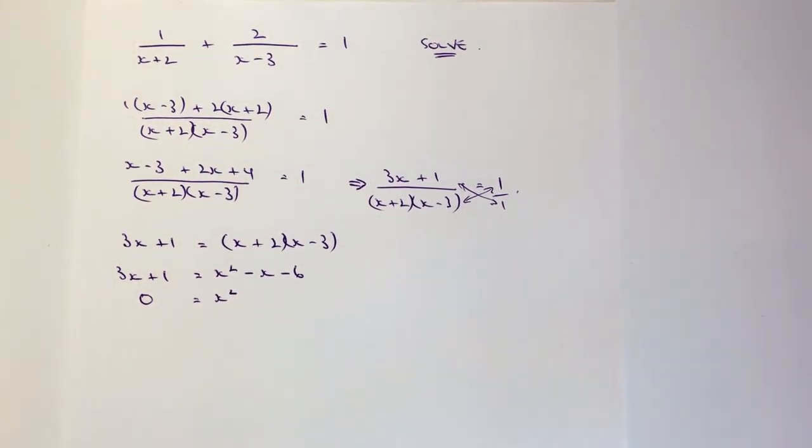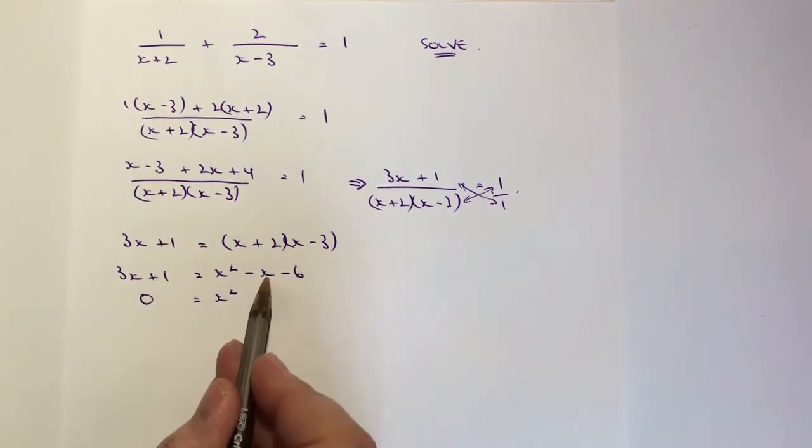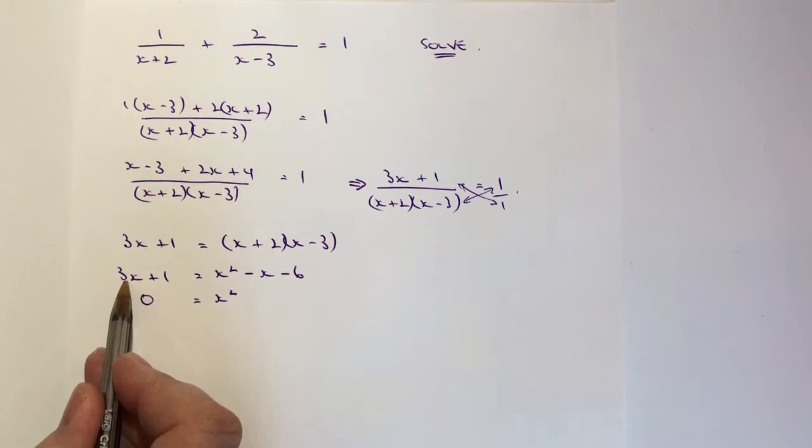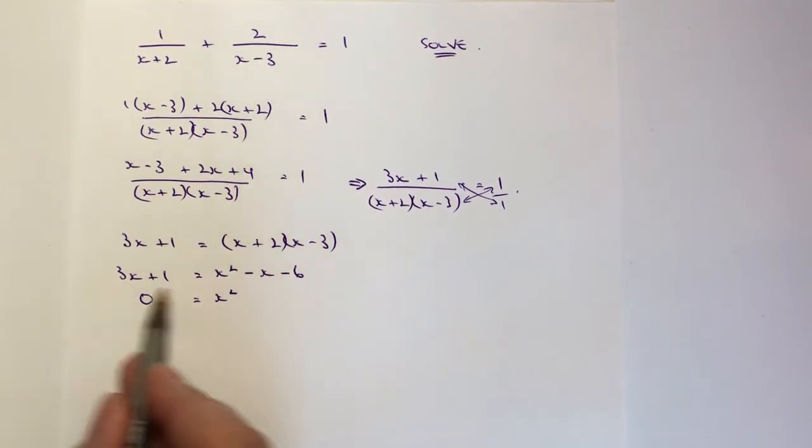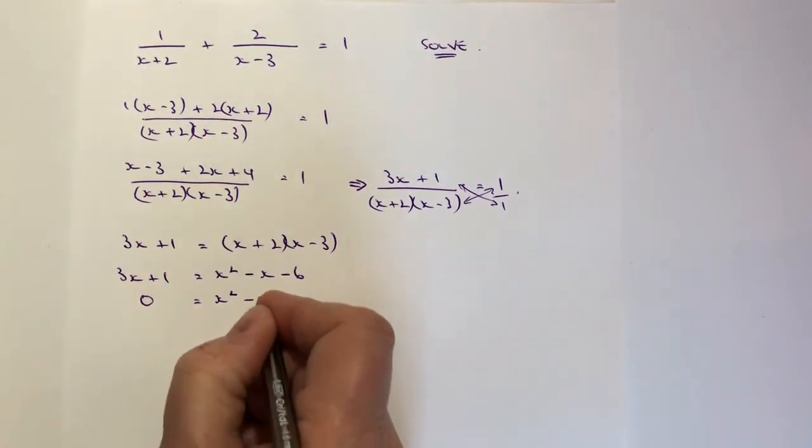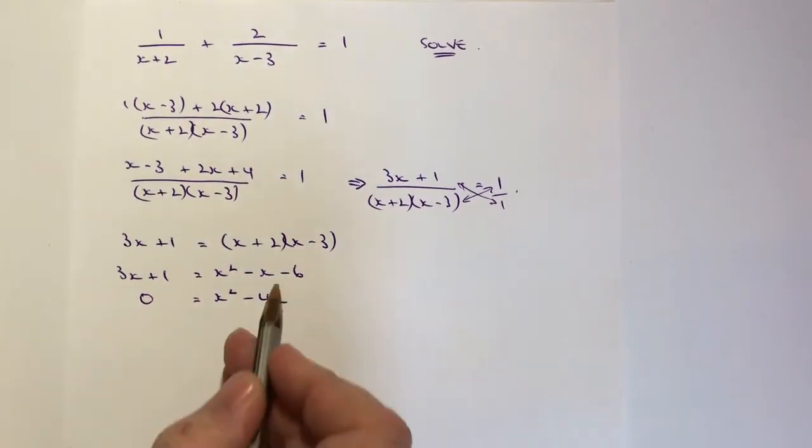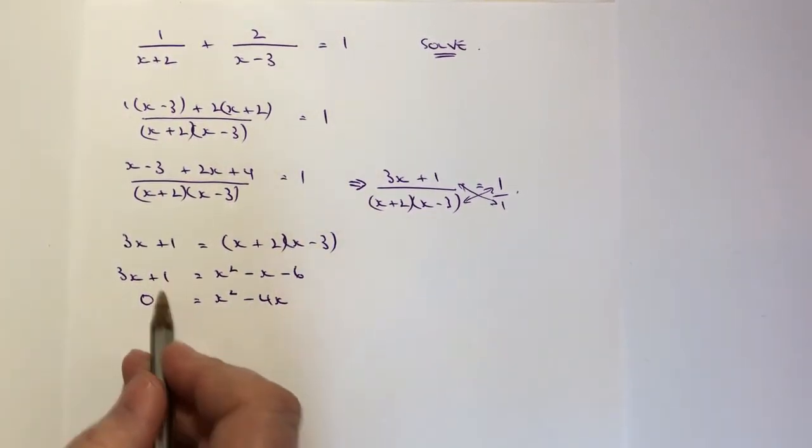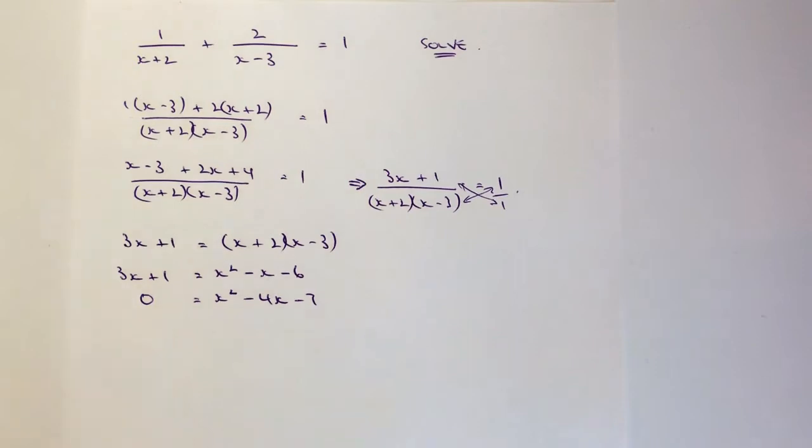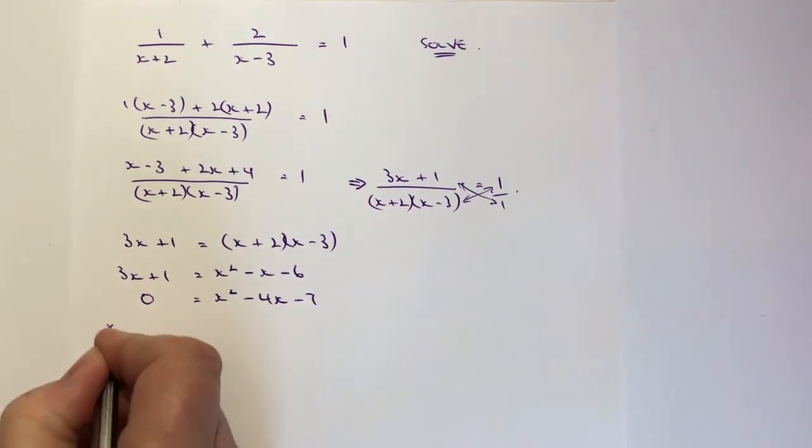Now if I make this equal to zero what I can do is solve it then as a quadratic equation. So in order to make it equal to zero I'm going to take these terms over to here so I've got minus x minus 3x, remember when you change sides you minus it so that's becoming minus 4x and I've got minus 6 minus 1 is going to be minus 7.